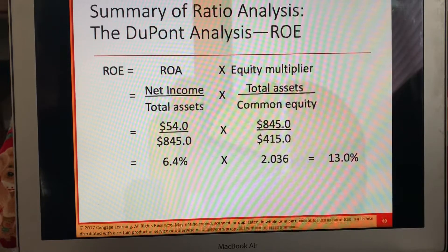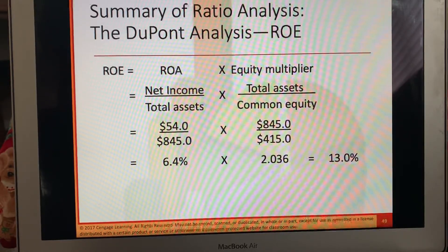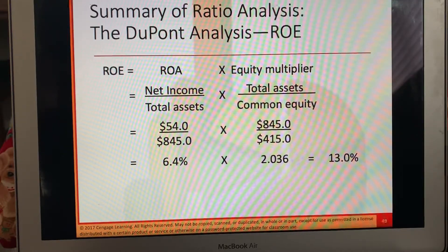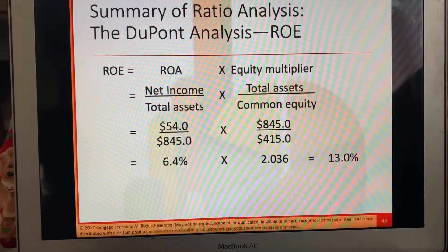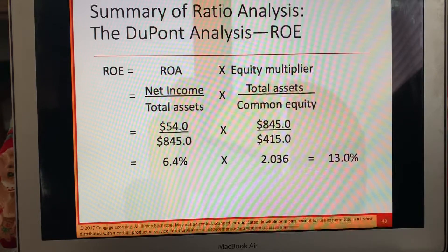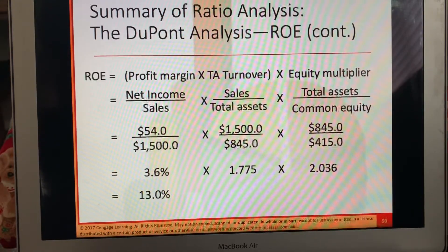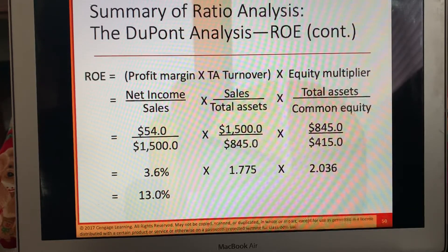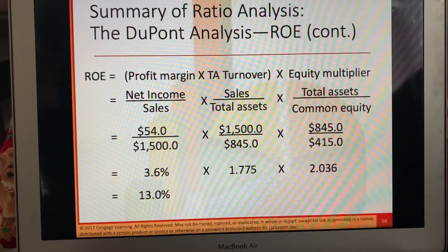Here's the ratio analysis for ROE: ROA is net income over total assets, times the equity multiplier — total assets over common equity. When you do all that math, it equals 13%. That's the process to get to your ROE. Going through all of that math, you get 13%. This is a little bit expanded.